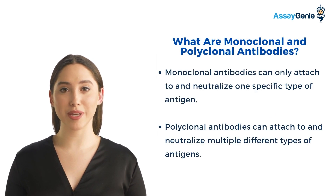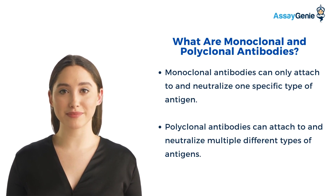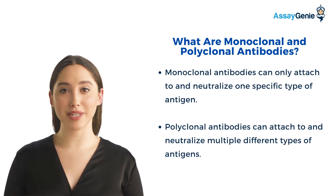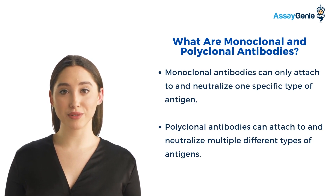Monoclonal antibodies bind to one specific epitope of an antigen and therefore have a high degree of specificity. Polyclonal antibodies are usually produced by a number of different B cells and have the ability to recognize and bind to multiple epitopes of an antigen. Polyclonal antibodies do not have the same degree of specificity as monoclonal.